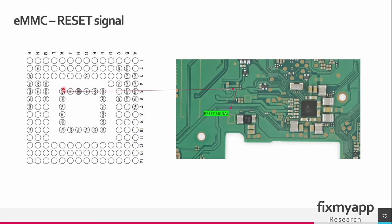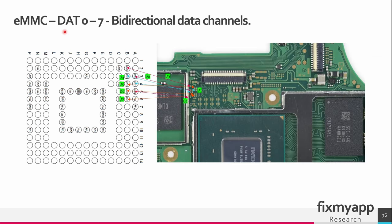The reset signal comes from the APU and will go to this pad, and from here it will go to the APU. The data channel 0-7 is a bi-directional channel so data can be sent between the APU and the eMMC storage, and the data lines are located in this section. When the APU wants to read data, it will send a read command to the eMMC. The eMMC will access that data in the memory flash part and read it back to the memory controller, which will then send it on these data lines back to the APU. If the APU wants to store data, the data goes on these data lines to the memory controller and from there it will be stored in the memory flash storage. On these pads, data lines 0-7 are located so you can measure them with an oscilloscope.